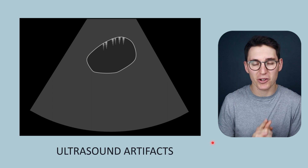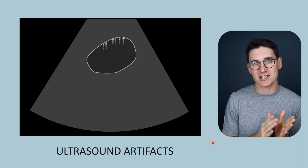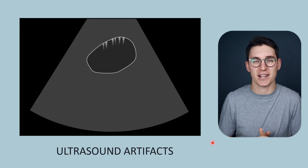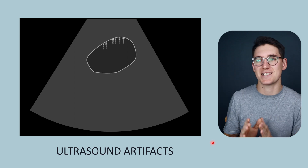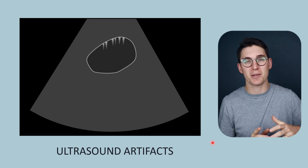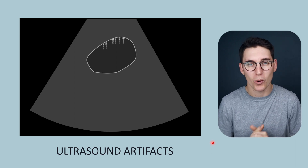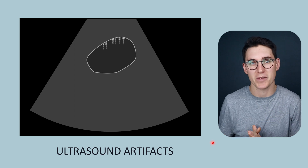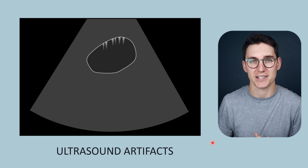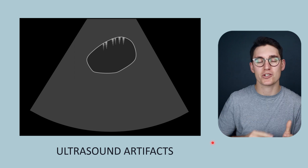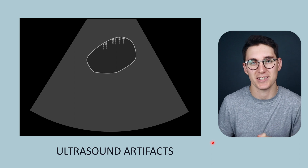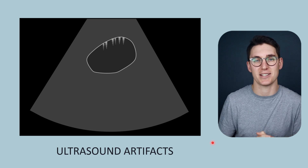Hello everybody and welcome back. Today we're going to be reviewing some of the common ultrasound artifacts. An artifact is a misrepresentation of the anatomy on our ultrasound image. Casting our mind back to Doppler ultrasound imaging, we looked at the concept of aliasing, where our calculated velocity of the blood was actually incorrect. We misplotted those spectral waveforms, not accurately representing what was happening in the tissues — and that's exactly what an artifact is.